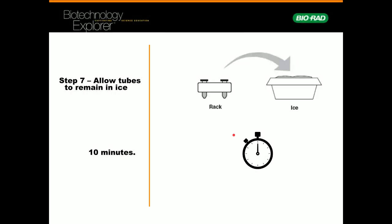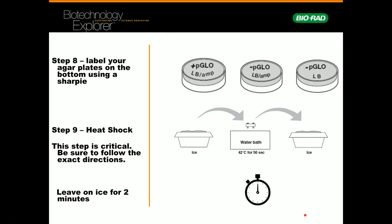In step seven, you're going to place it back in the rack, put it back on ice, and pay attention to time periods. It says leave on ice for 10 minutes. While it's on ice for those 10 minutes, you can begin working on the handout, the worksheet that's going to be answering questions about the lab and the bacteria. Work on that while you're waiting, but set your timer so you can keep track. While you're doing that, you can label your three plates.